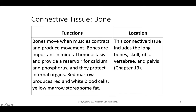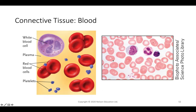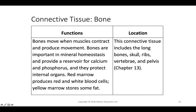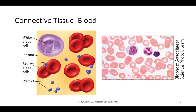Bones protect internal organs — like ribs protecting the heart and lungs. Red bone marrow produces red and white blood cells, and yellow bone marrow stores fat. Bones are found as long bones and also in the skull, ribs, vertebrae, and pelvis, forming both the appendicular and axial skeleton.